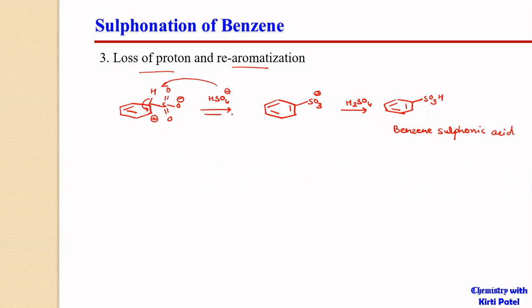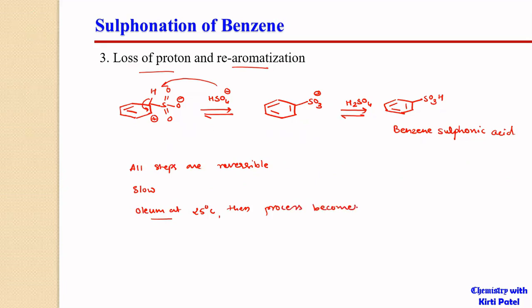All the steps are reversible in this reaction, making the overall process slow. However, it can be accelerated by using oleum at room temperature (25°C). When oleum is used, the process becomes fast and large amounts of product are formed — giving higher yields. When using concentrated H2SO4 alone, it is a slower process with lower yields. This concludes the sulfonation reaction. Thank you very much for today.